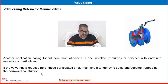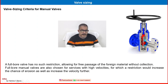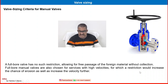Another application calling for a full bore manual valve is one installed in slurries and services with entrained material and particulates. If the valve has a reduced bore, these particulates and slurries have a tendency to settle and become trapped at the narrowed constriction. A full bore valve has no such restriction, allowing for free passage of foreign material. Full bore manual valves are also chosen for high-velocity services, where a restriction would increase the chance of erosion.